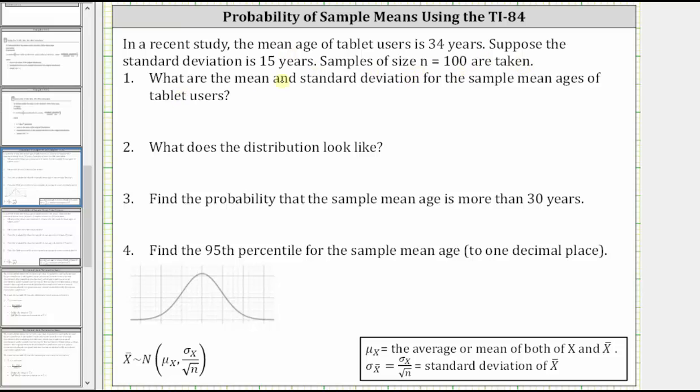Number one, what are the mean and standard deviation for the sample mean ages of tablet users? Looking at our notes below, μ sub x̄, the mean of the sample population, is equal to the average or mean of both x and x̄, which means the mean of the population is the same as the mean for the sample mean ages. So we'll say μ sub x̄ is equal to 34.